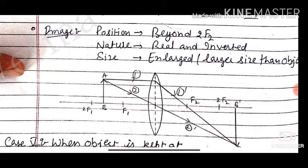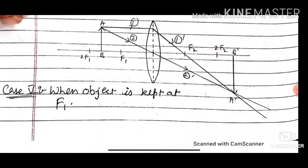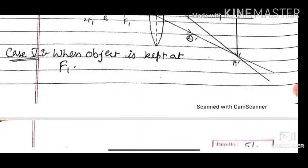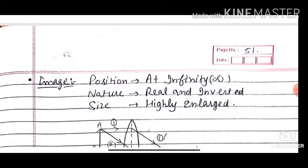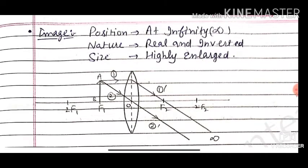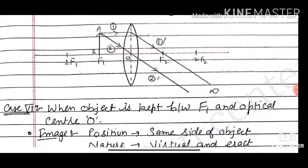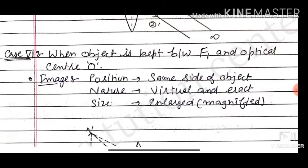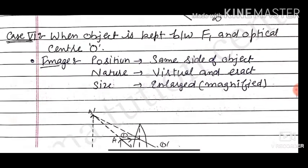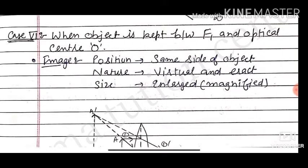Continuing cases: a ray parallel to the principal axis and a ray passing through the optical center are used to locate images. Case 5: when the object is at focus F1, the image is formed at infinity — highly enlarged, parallel rays emerge after refraction.